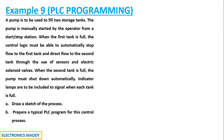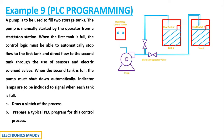There is a pump used to fill two storage tanks, started manually through push button switches by the operator. Whenever the first tank is full, the flow of water should stop for the first tank and be redirected to the second tank using sensors and valves. When the second tank is full, the pump shuts down and indicator lamps turn on. Let us draw the sketch of the process first, as it will give a clear indication on how to proceed with the ladder diagram.